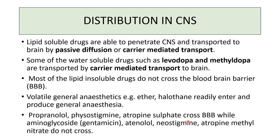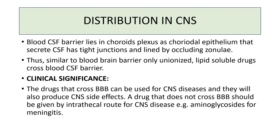Propranolol, physostigmine, and atropine cross the blood-brain barrier, while aminoglycosides, atenolol, and neostigmine do not. The blood-CSF barrier lies in the choroid plexus, where the choroidal epithelium secreting CSF has tight junctions lined by occluding zonules — similar to the blood-brain barrier, only unionized lipid-soluble drugs cross it. Clinical significance: drugs that cross the blood-brain barrier for CNS diseases will also produce CNS side effects. Drugs that do not cross can be given intrathecally, such as aminoglycosides for meningitis.